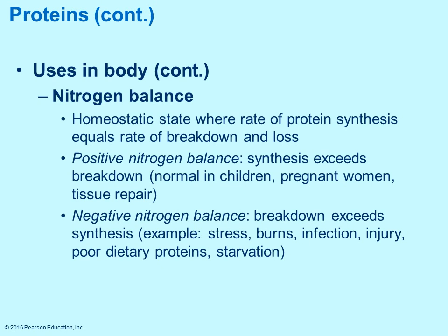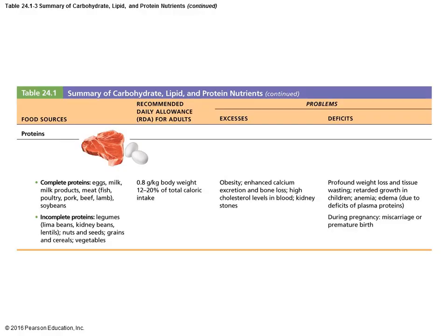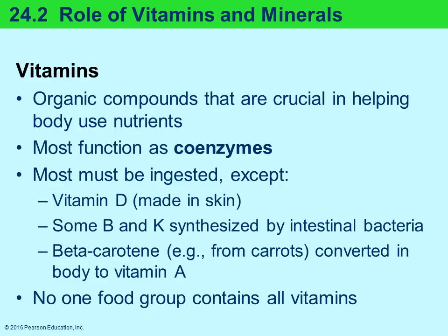Proteins contain nitrogen, and normally homeostasis has an equal rate of protein synthesis and breakdown. If you have a positive nitrogen balance, synthesis exceeds breakdown — you are making more protein. Negative nitrogen balance is the reverse, where breakdown exceeds synthesis; this often occurs during infection, stress, or starvation. How much protein you need depends on factors such as age, size, and personal metabolic rate. Most Americans have more than enough protein in their diet.